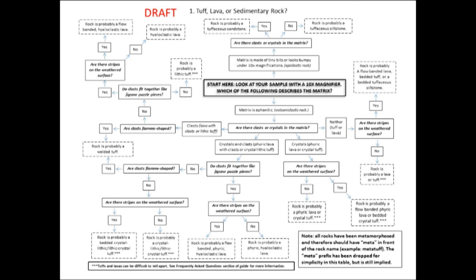If it's aphanitic, the next step is: does it have crystals, clasts, both, or neither? Crystals are fairly self-explanatory — you can note whether it's quartz or feldspar. For clasts, you can have clasts that aren't diagnostic, but there are two types that are diagnostic of specific rock types. If your option tells you that you have clasts, you need to decide if it has either of these two we're about to discuss.